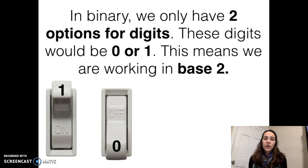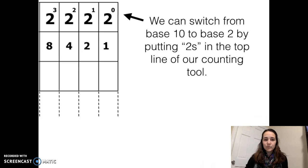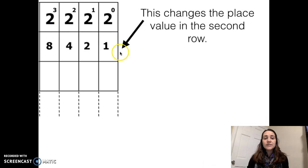Now, in binary, we only have two options for our digits. We can have a 0, or we can have a 1. This means that instead of working in base 10, we're now working in base 2. We can switch from base 10 to base 2 by changing our diagram. Instead of having 10's across the top, we're going to have 2's across the top. Notice that this changes the place value in the second row.